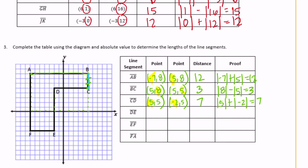Segment DE: D was at negative 2, 5 and E is at negative 2, negative 4. They are different in their y-coordinates. They are on opposite sides of 0 — one is positive, one is negative. So we add: absolute value of 5 plus absolute value of negative 4 equals 9.